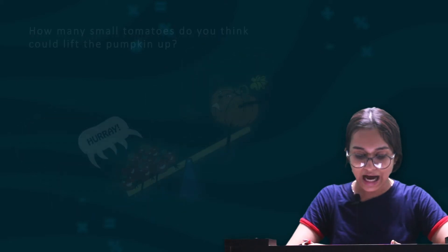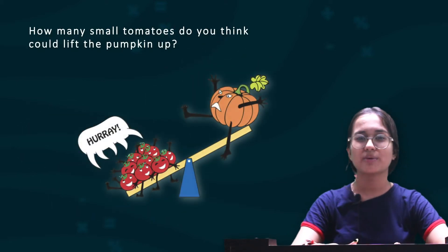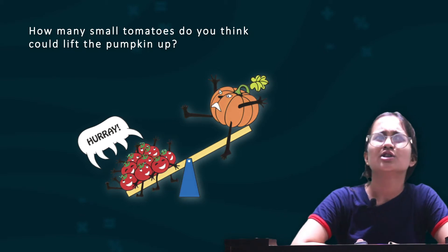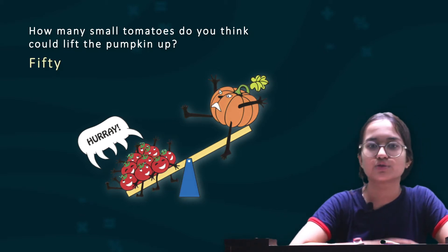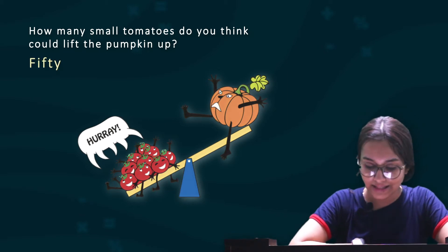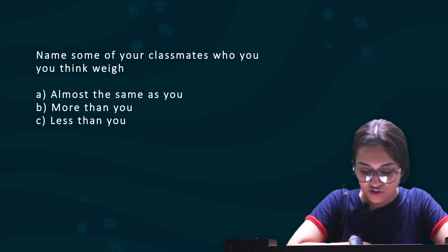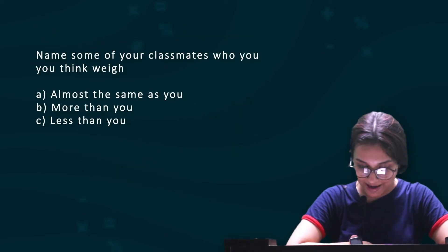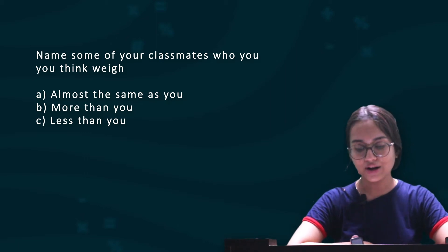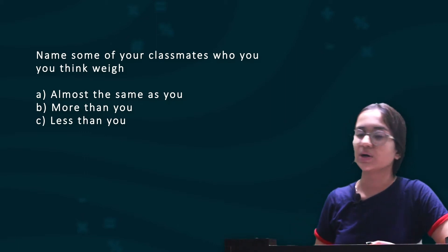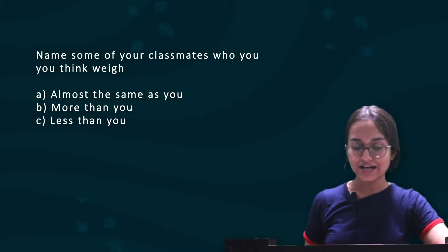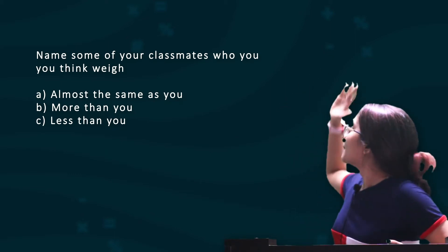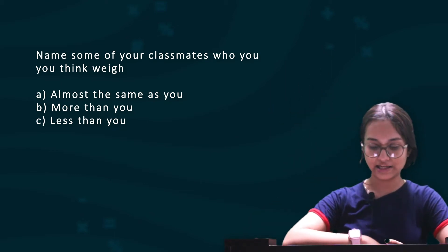Now, how many small tomatoes do you think lifted the pumpkin? I feel around 50 tomatoes would have lifted up the pumpkin. Then, name some of your classmates whom you think weigh almost the same as you, more than you, or less than you. You need to write about your classmates in each of these weight categories.